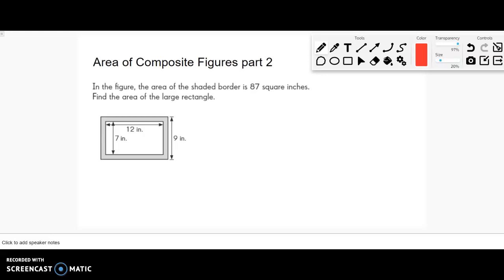All right, thanks for giving this a try. Here are some slightly more challenging composite figures. For example, this one says the area of the shaded border is 87 square inches, so I'm going to write myself a note that that's 87 so I know that.